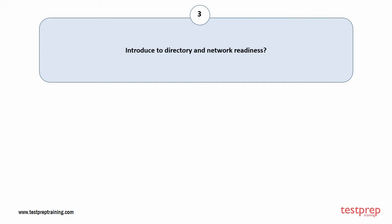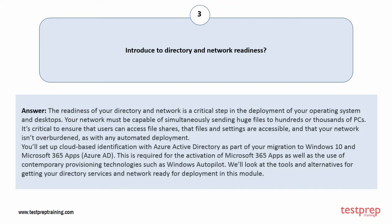Question number 3: Introduce directory and network readiness. The readiness of your directory and network is a critical step in the deployment of your operating system and desktops. Your network must be capable of simultaneously sending huge files to hundreds or thousands of PCs. It's critical to ensure that users can access file shares, that files and settings are accessible, and that your network is not overburdened, as with any automated deployment. You'll set up cloud-based identification with Azure Active Directory as part of your migration to Windows 10 and Microsoft 365 apps. This is required for the activation of Microsoft 365 apps as well as the use of contemporary provisioning technologies such as Windows Autopilot. We'll look at the tools and alternatives for getting your directory services and network ready for deployment in this module.